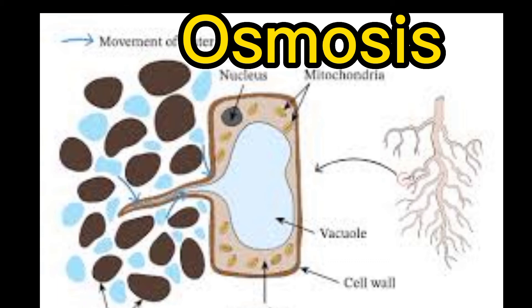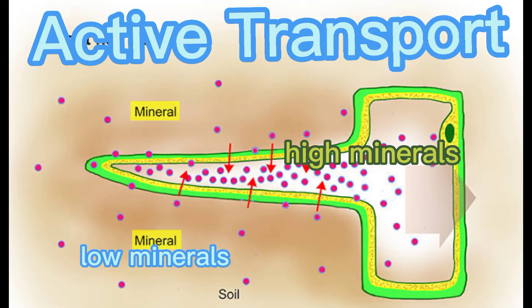Root hair cells actively transport mineral salts into the cell, which means they need energy. These cells are actively respiring in order to provide energy, so that more mineral salts move from low concentration outside in the soil into the high concentration inside the cell.